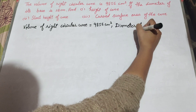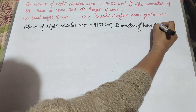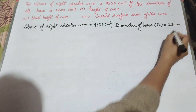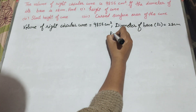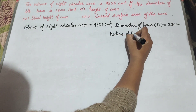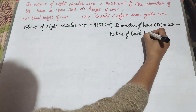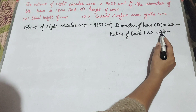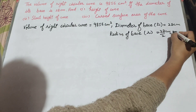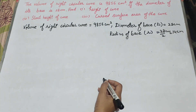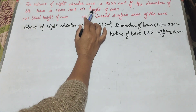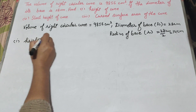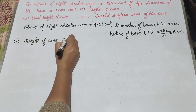To find the height of the cone, we need to find the radius of the base. To find the radius, we divide the diameter by 2: 28 divided by 2 is equal to 14 centimeter. So the radius is 14 centimeter.